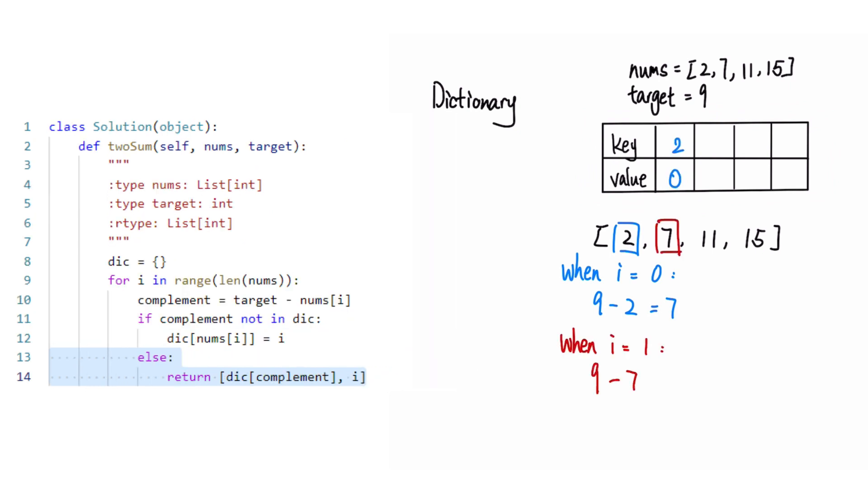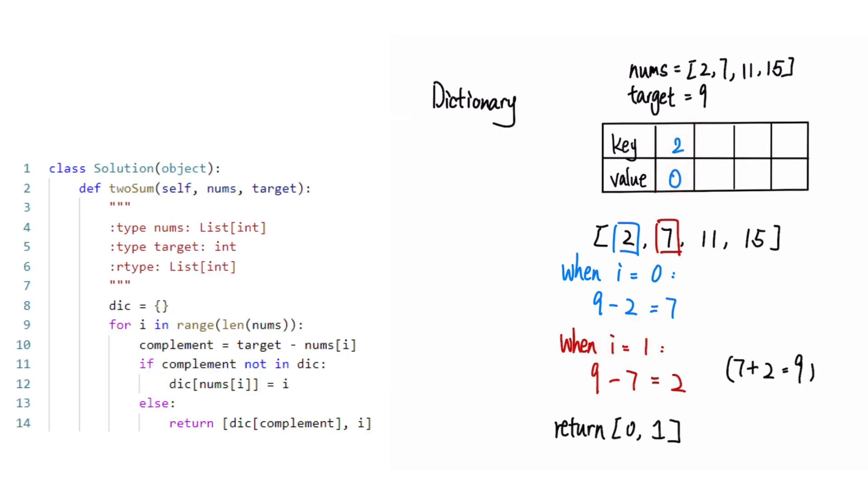If it is, it means that the complement plus the current element is the target. So we return the indices of the two elements. This approach has a time complexity of O(n), which is much faster than the brute force approach.